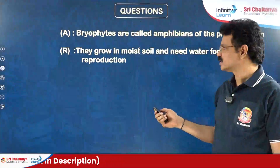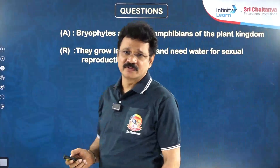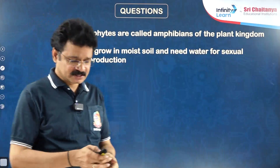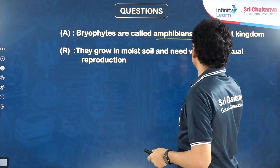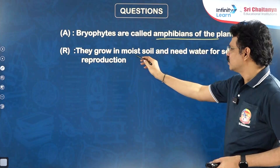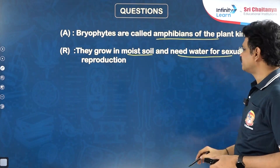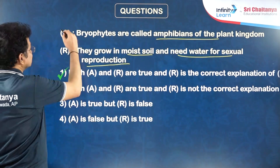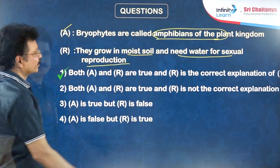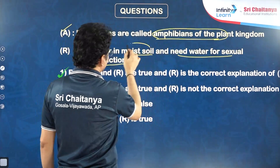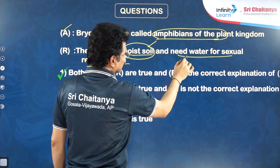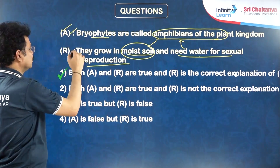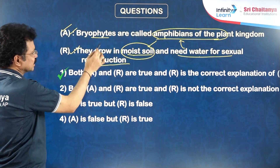Now for assertion-reason type questions. Question: Bryophytes are the true amphibious plants in the plant kingdom. Reason: They grow in moist soil and water is needed for sexual reproduction, especially transmission of male gametes. Assertion is true, reason is true, and reason is the correct explanation for the assertion — because of moist climate requirement and essentiality of water for fertilization, they are called amphibious plants.